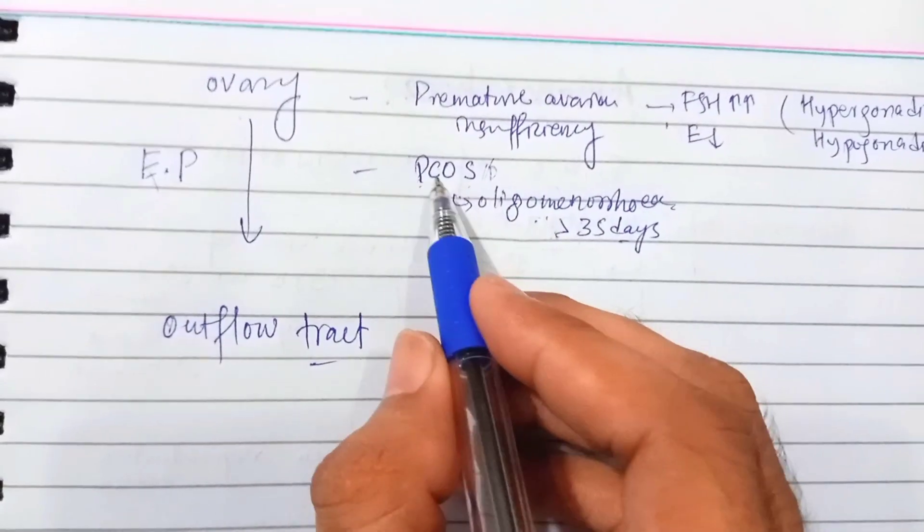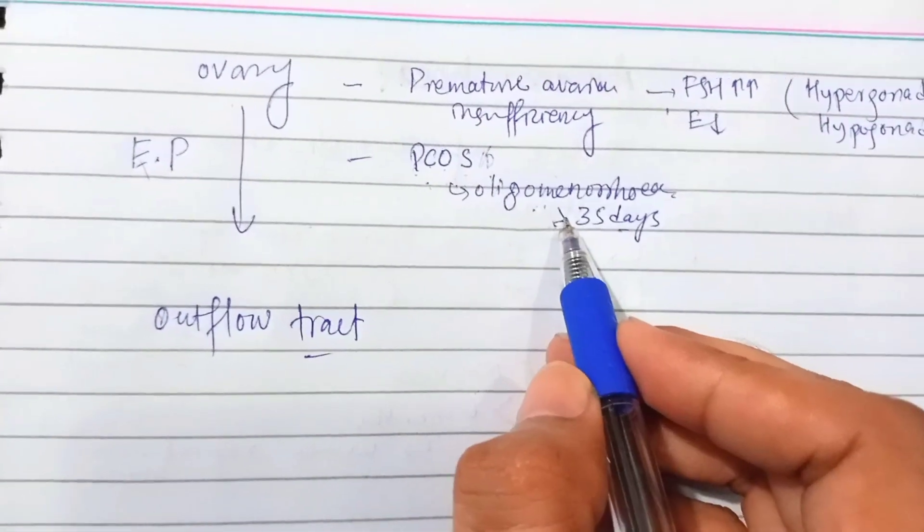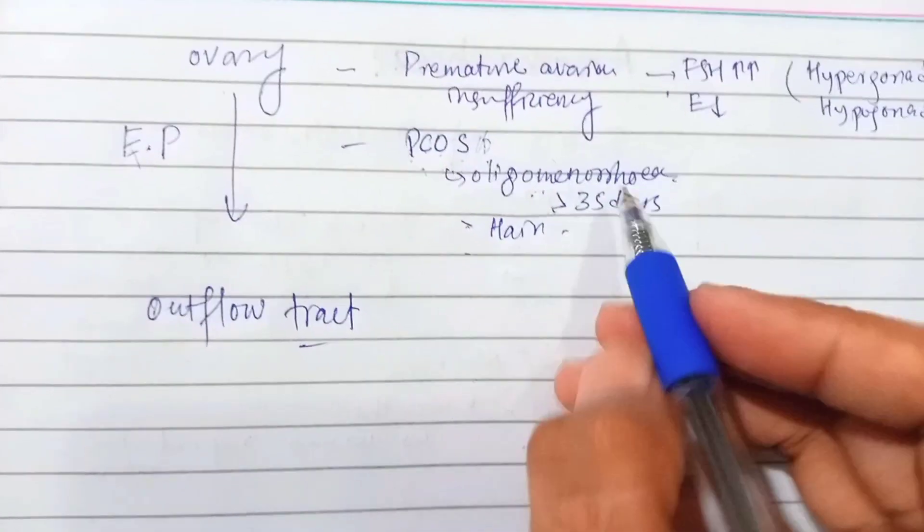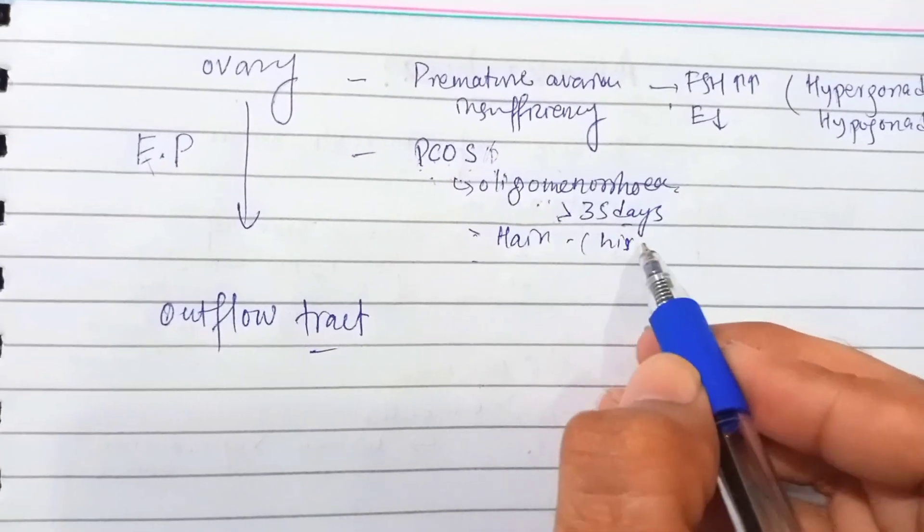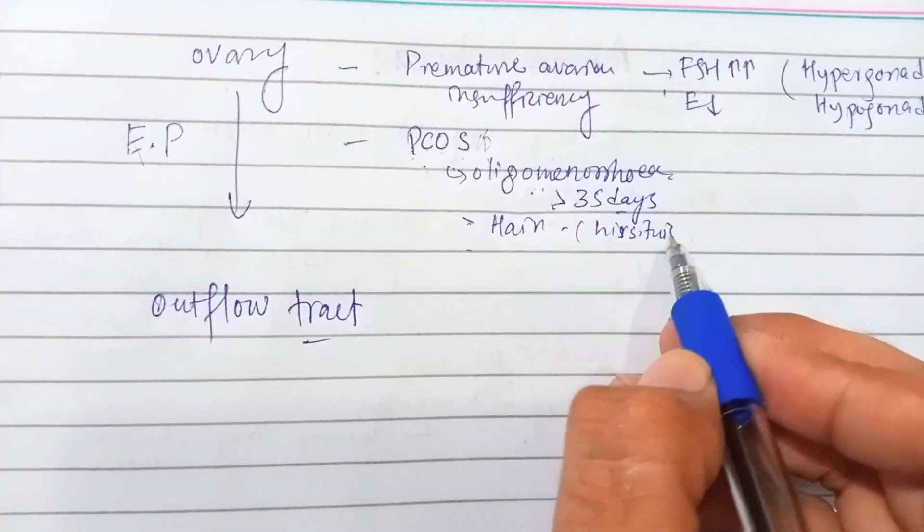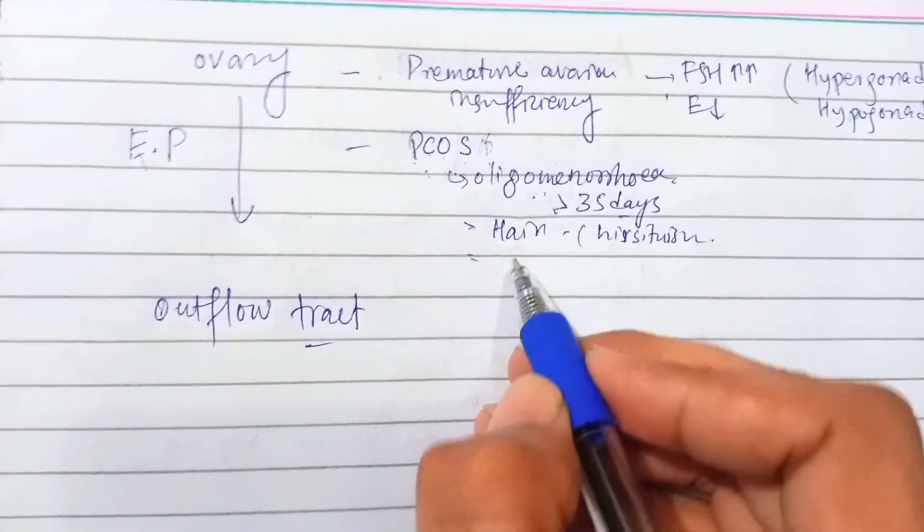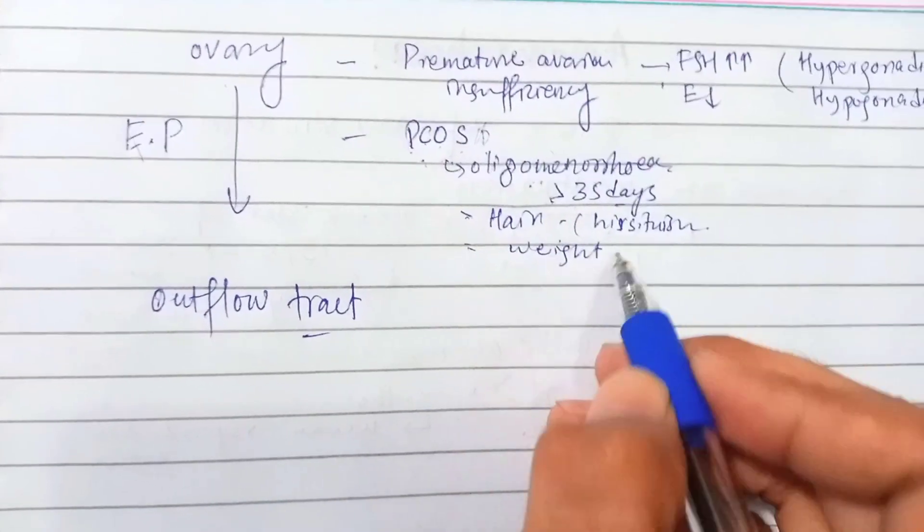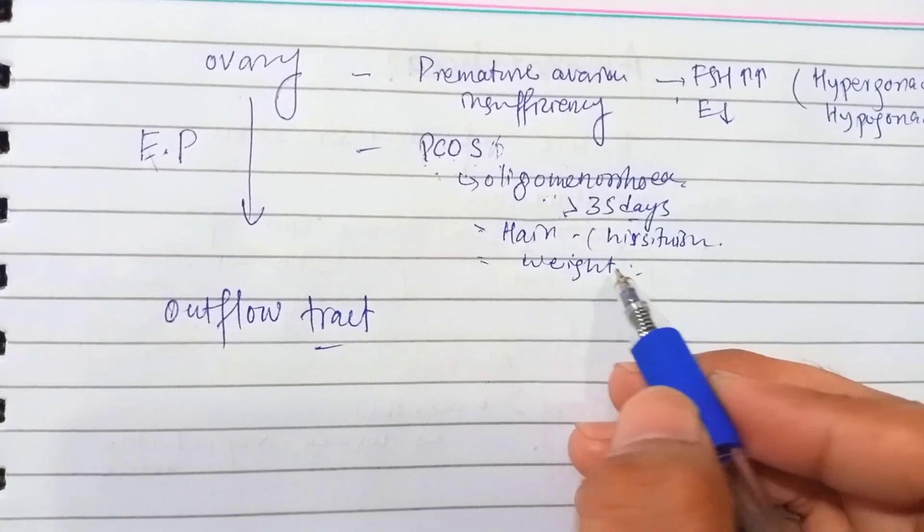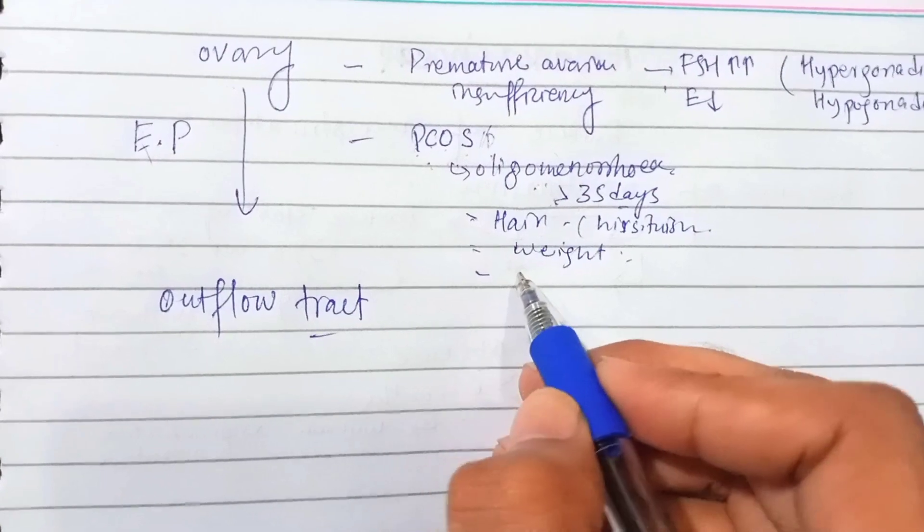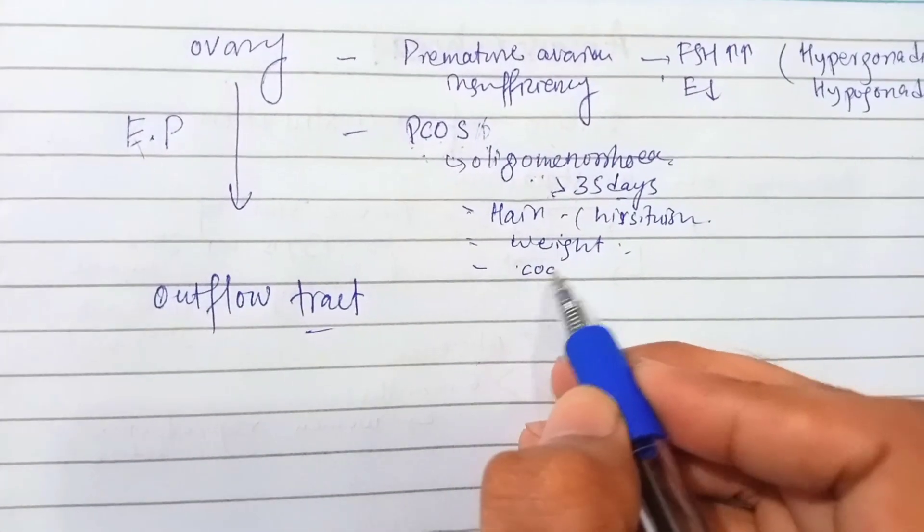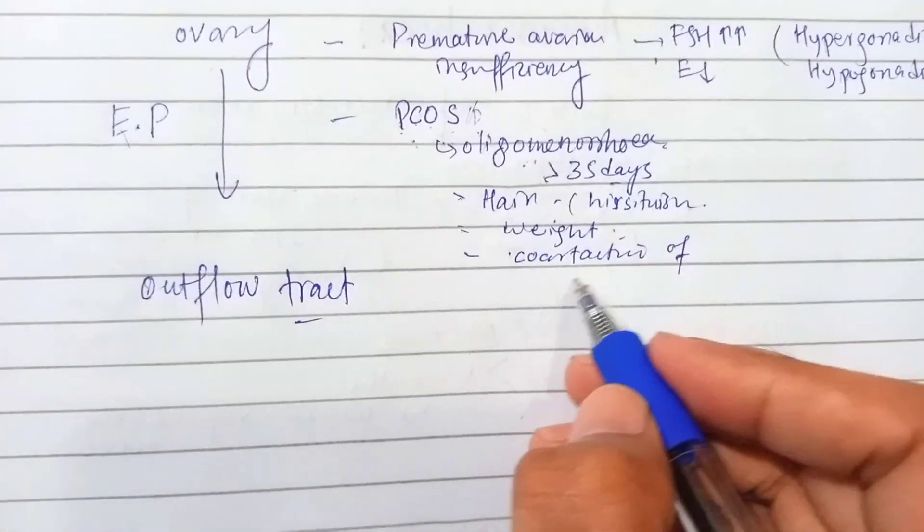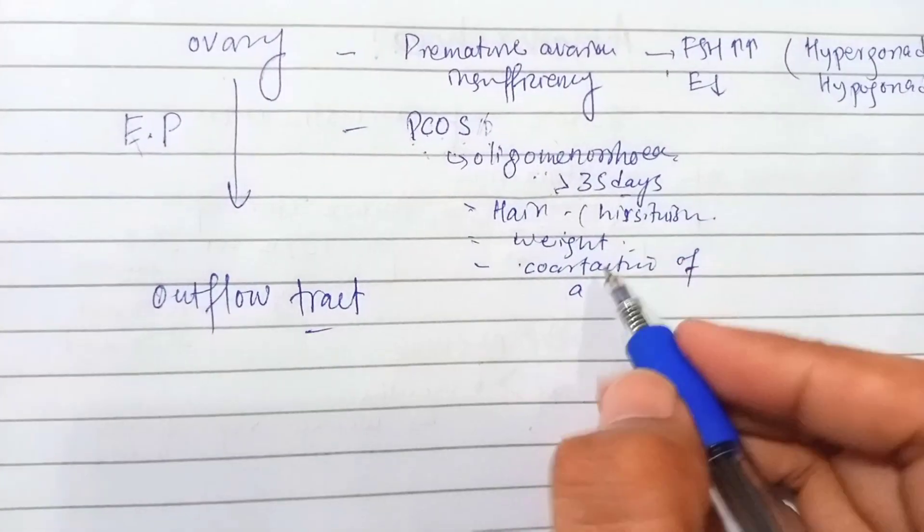One point of polycystic ovarian syndrome is oligomenorrhea. Another is: is there any hair growth? It is called hirsutism. Is there difficulty in weight loss? Is there coarctation of aorta?